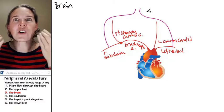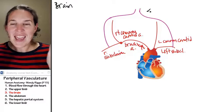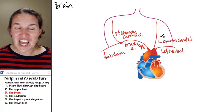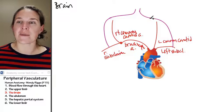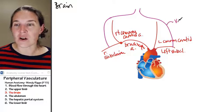Those holes are our transverse foramina, and these arteries travel through those holes up to the brain. These arteries are the vertebral arteries.